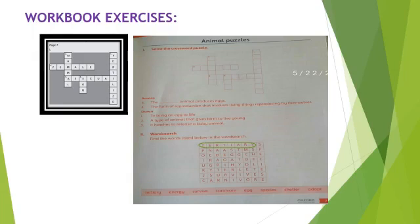Now the third sentence is it hatches to release a baby animal. So the answer is egg hatches to release a baby animal. Now the question number two is word search. Find the words listed below in the word search. So class it is very easy exercise and it is also your homework. You have to do it by yourself. So in this exercise you will circle out the complete words which are given below. Just as I have done tertiary. Same in this manner you have to circle the correct spelling of the words which are given below.